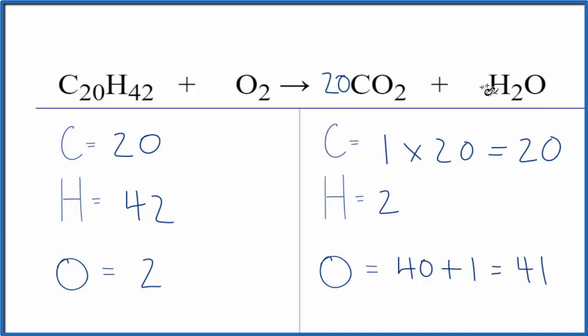Let's balance the hydrogens. We can put 21 right here. Two times 21 gives us 42, so now the hydrogens are balanced.